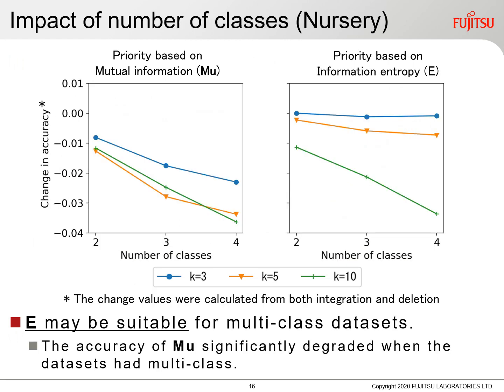Next, we will look at changes in accuracy due to the number of classes using the nursery dataset. When the number of classes is reduced, the degradation of accuracy is improved. Looking at the degree of improvement, the mutual information method shows a larger improvement. Conversely, the accuracy of the mutual information method significantly degrades if a dataset has multi-class. When a dataset has multi-class, the entropy method may be more suitable.